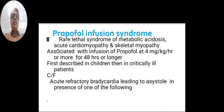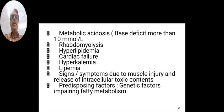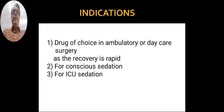The clinical features include acute refractory bradycardia leading to asystole in the presence of one or more of the following: metabolic acidosis with base deficit more than 10 mmol per litre, rhabdomyolysis, hyperlipidemia, cardiac failure, hyperkalemia, and lipemia, which is the most common finding. These signs and symptoms are due to muscle injury and release of intracellular toxic contents. The predisposing factor is genetic impairment of fatty acid metabolism.